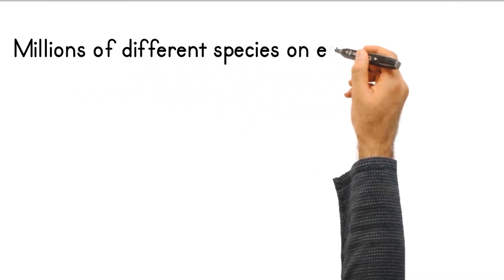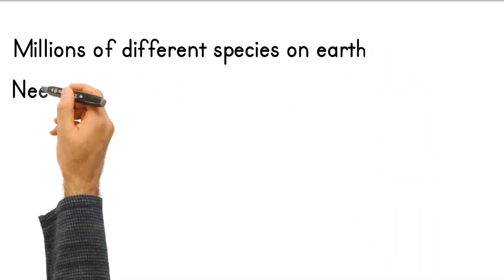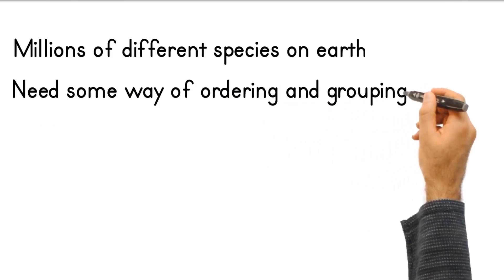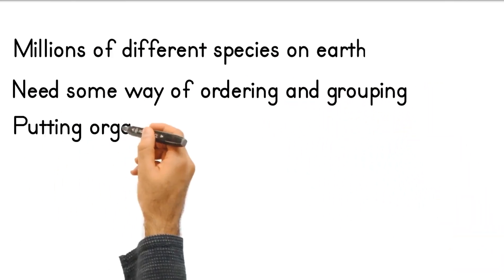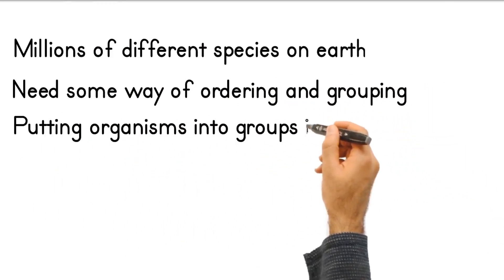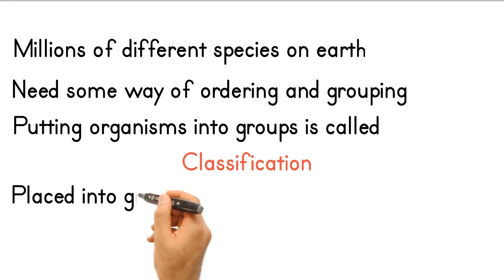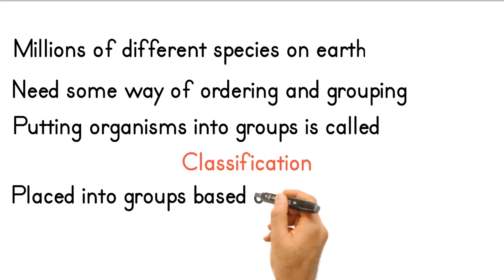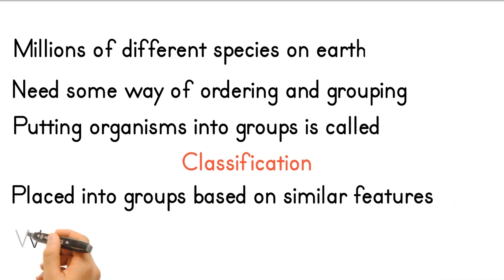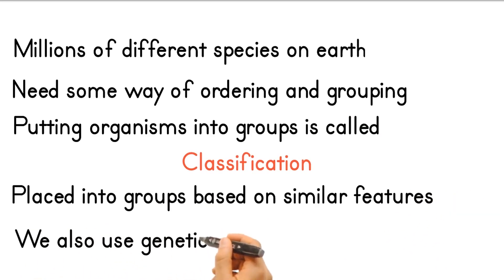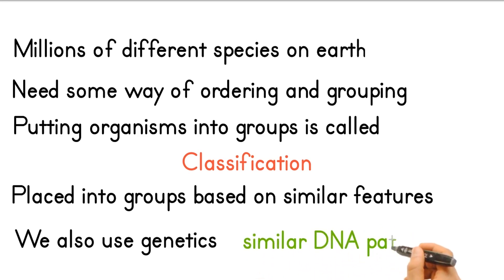There are millions of different species of organisms on Earth. Scientists need some way of ordering and grouping them. Putting organisms into groups is called classification. Organisms are placed into groups based on similar features and characteristics. We also use genetics to group organisms with similar DNA patterns.